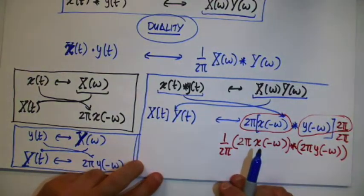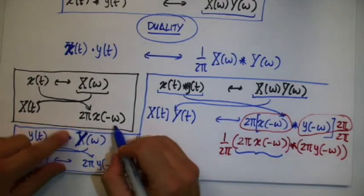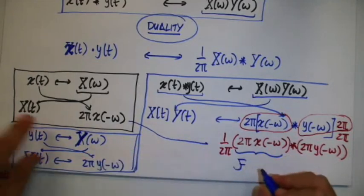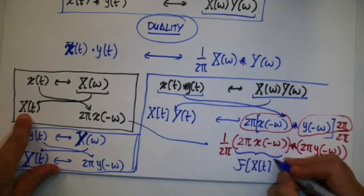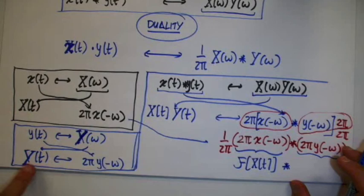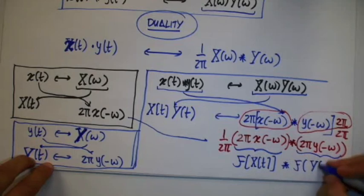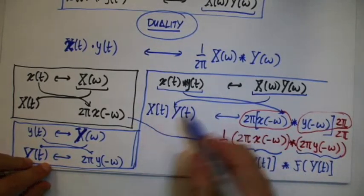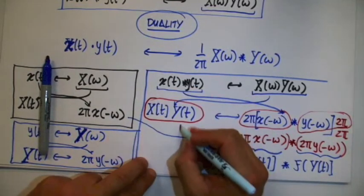But now, what is this? This is the Fourier transform of x of t, and this is the Fourier transform of y of t, capital Y of t, 1 over 2π. And that's how we prove the results. So we have that the Fourier transform of this is equal to this.